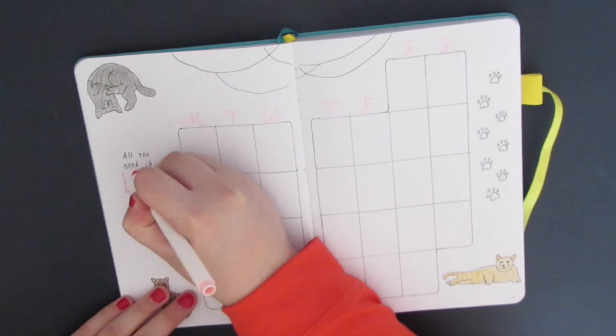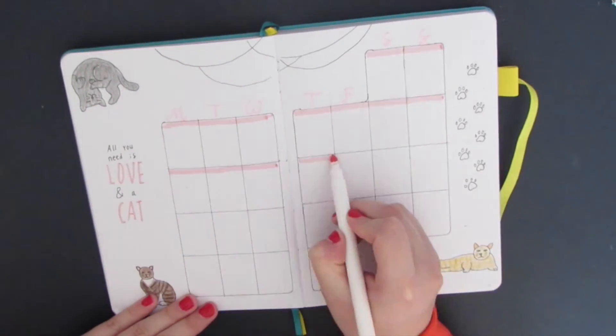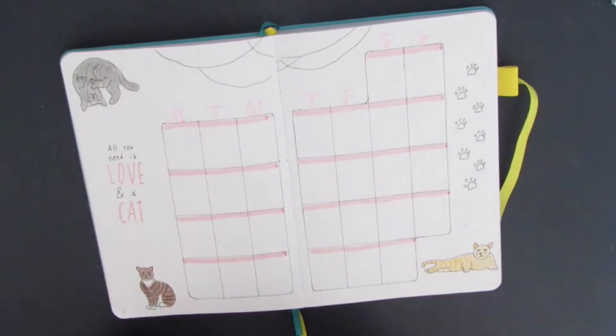I'm then finishing off the rest of the quilt with my pink Crayola super tip. It says, all you need is love and a cat. I'm also using that same pink marker to color in the top section of each of my calendar boxes.